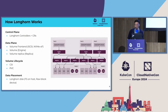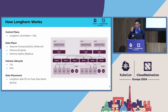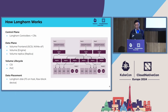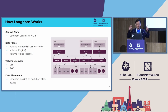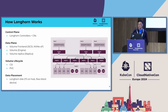How does Longhorn work? The design is very straightforward. The first part is the control plane — the control plane is deployed as a DaemonSet, we call it Longhorn Manager, composed of Longhorn controllers. It's a standard Kubernetes controller reconciling Longhorn custom resources.